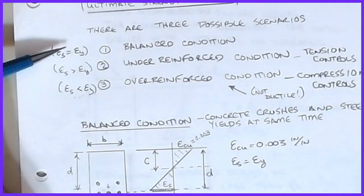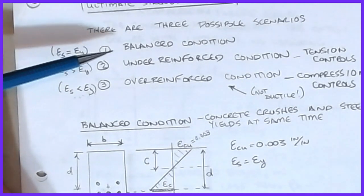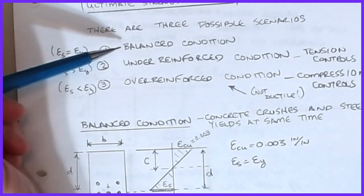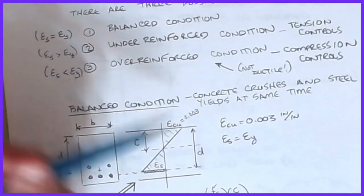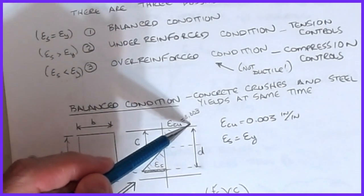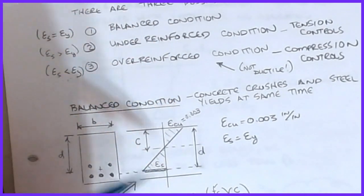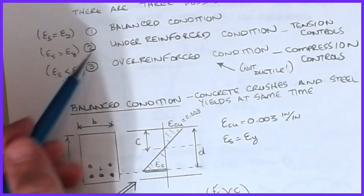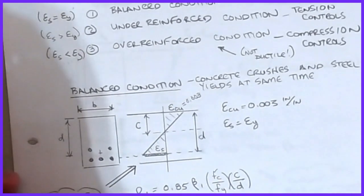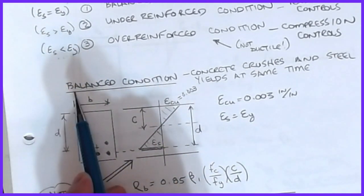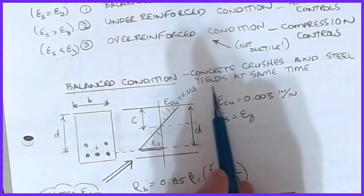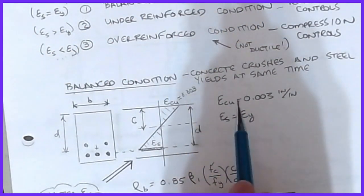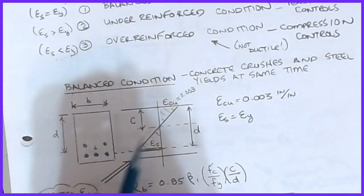We want to avoid the over-reinforced case because it's not ductile. When we looked at the phi reduction factors, the over-reinforced case got a hefty penalty — phi was about 0.65 — while the under-reinforced section could be as high as 0.9 depending on the magnitude. Now, the balanced condition has been used by ACI 318 as a break-even point. If I can find this situation I know all the values — epsilon_y and 0.003 — and I can define the line and find every strain.